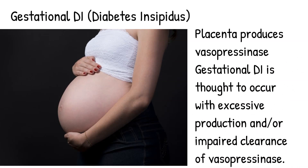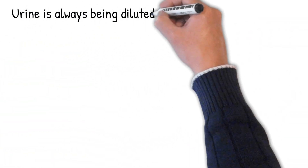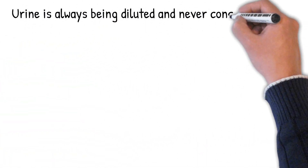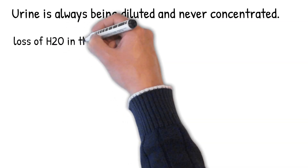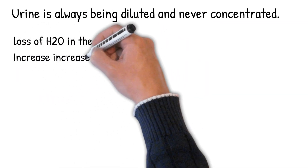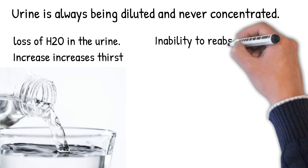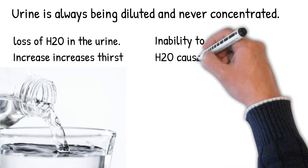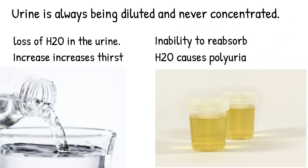Urine is always being diluted and never concentrated. Excessive loss of free water in the urine increases thirst, known as polydipsia. Inability to reabsorb free water causes polyuria, or excess urination. Hypernatremia is due to the loss of pure water.